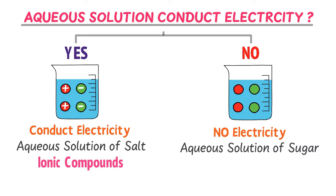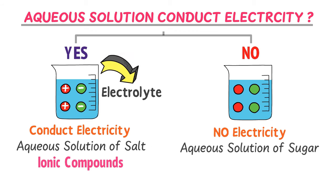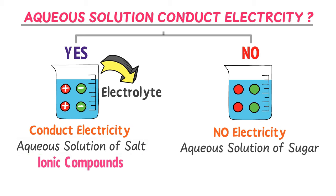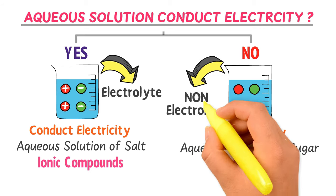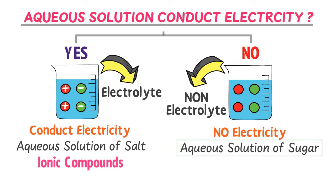Aqueous solutions which conduct electricity are called electrolytes. For example, the aqueous solution of salt is an electrolyte. Those aqueous solutions which do not conduct electricity are called non-electrolytes. For example, the aqueous solution of sugar is a non-electrolyte.